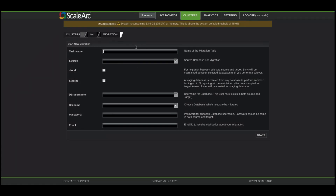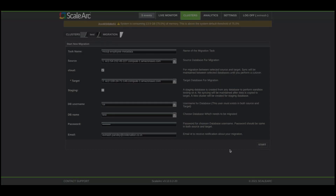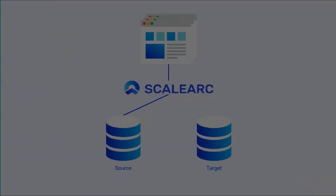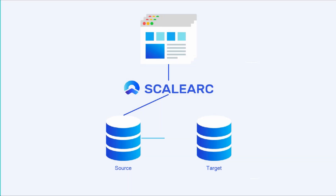On this form, you'll specify the roles for each of the database servers, and also provide an email address where you'll get status notifications. In the background, ScaleArc begins syncing the target database until it's fully caught up, and it will keep it in sync until you are ready to switch over your application.